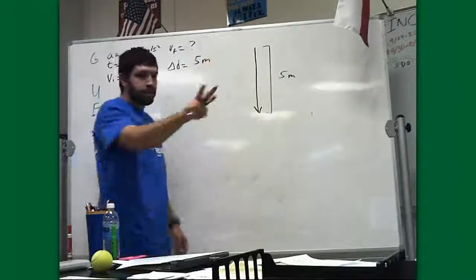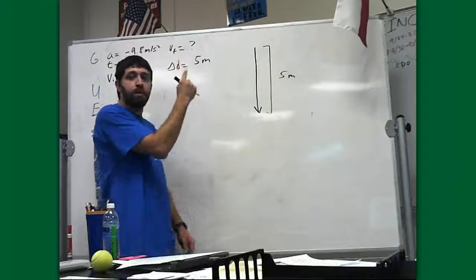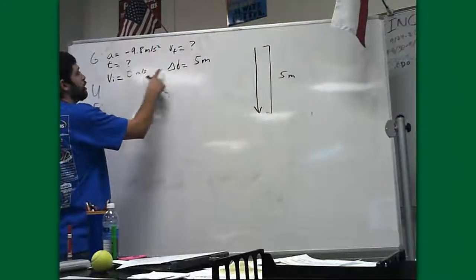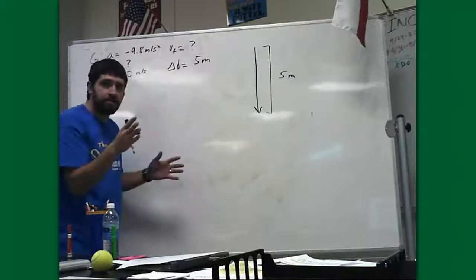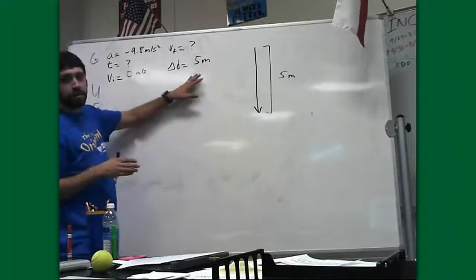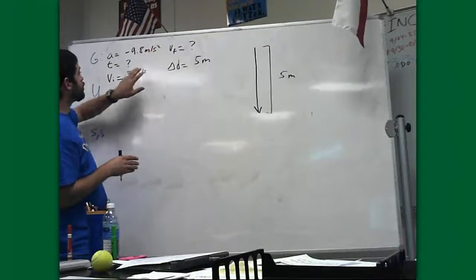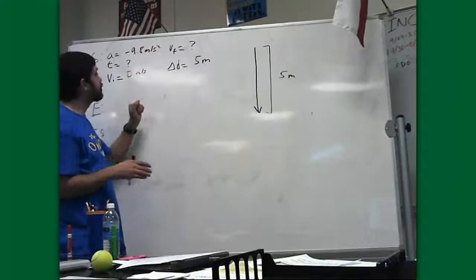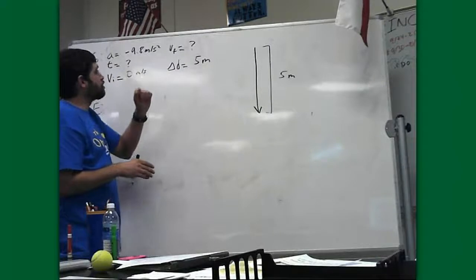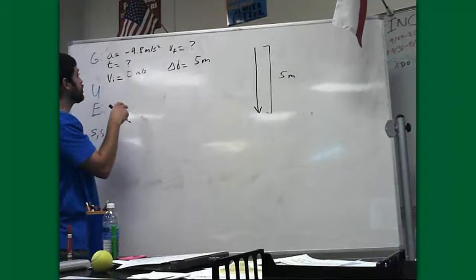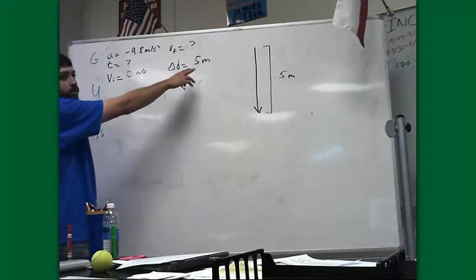Now, I want to think about two things, remember? Two things before I move on from the G-step. Number one is units. I'm going to look at all my units and check to see if I need conversions. These happen to be okay. Five meters is okay. Meters per second squared is good. Meters per second is good. Next, I want to know about direction.